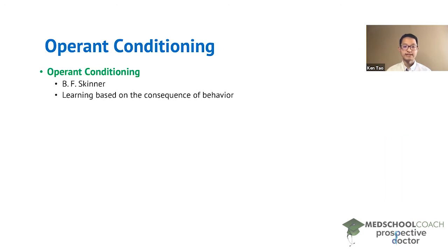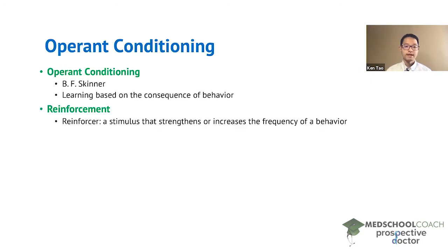Operant conditioning is learning based on the consequence of behavior. This is different from classical conditioning, where the behavior of the animal is not important. In classical conditioning, animals simply learn to associate a conditioned or neutral stimulus with an unconditioned stimulus. In operant conditioning, we're looking at modifying an animal's behavior either to strengthen or weaken the frequency of that behavior.